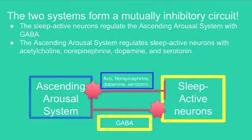The two systems together form a mutually inhibitory circuit. The sleep-active neurons regulate the ascending arousal system with GABA, and the ascending arousal system regulates sleep-active neurons with acetylcholine, norepinephrine, dopamine, and serotonin, as shown in the figure below.